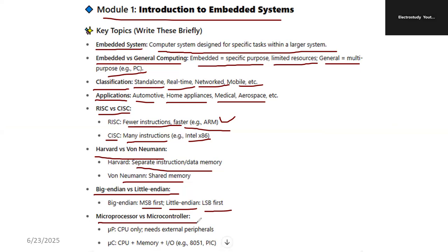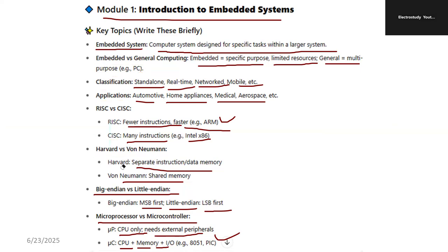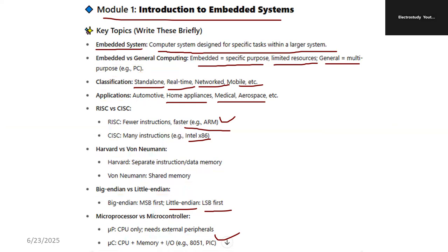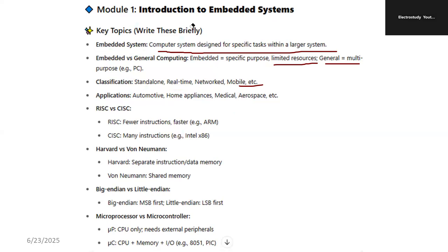Next is microprocessor versus microcontroller. A microprocessor comprises only a CPU and needs external peripherals. A microcontroller comprises CPU, memory, and I/O devices — everything is inbuilt. For example, PIC microcontroller and 8051 microcontroller. For microprocessors, an example is the 8085 microprocessor. These points you have to remember. Surely you may get a few questions based on these fundamentals. This is purely a fundamental module.